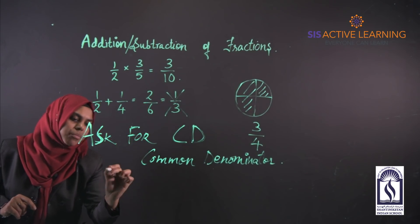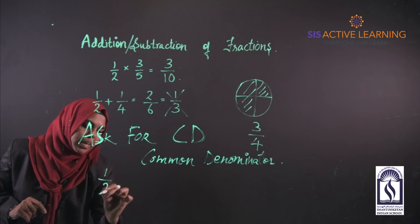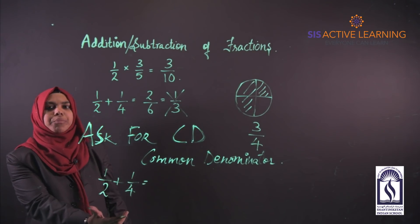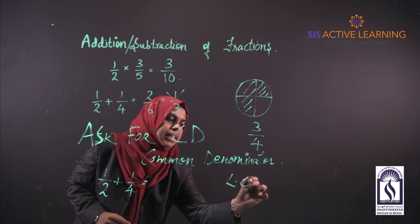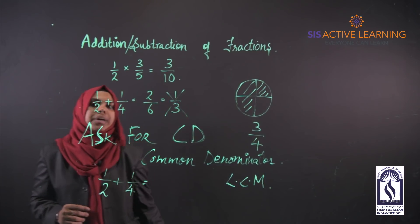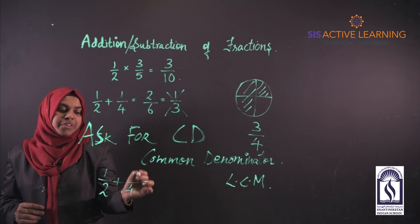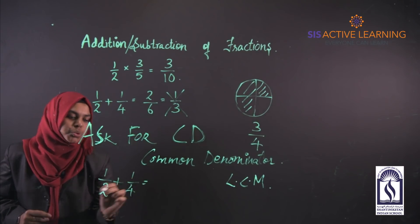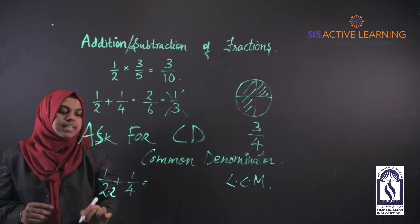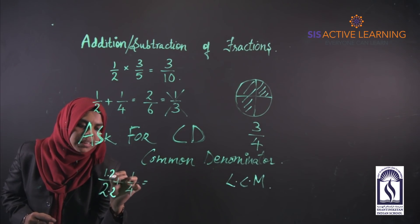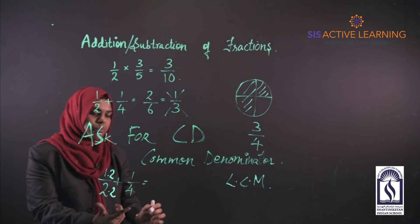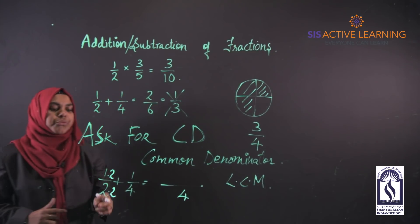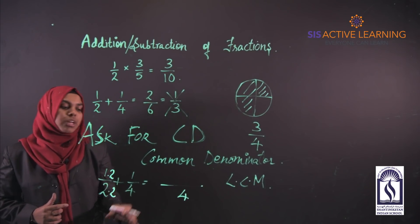We will take the same example: 1/2 + 1/4. We need a common denominator, so we take the LCM — least common multiple — of 2 and 4. Since 4 is a multiple of 2, the LCM is 4. We multiply the same number in the numerator as well, so the common denominator is 4.